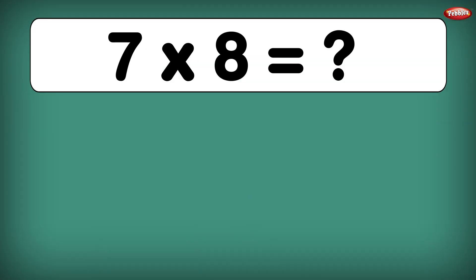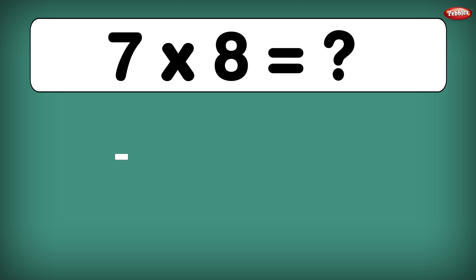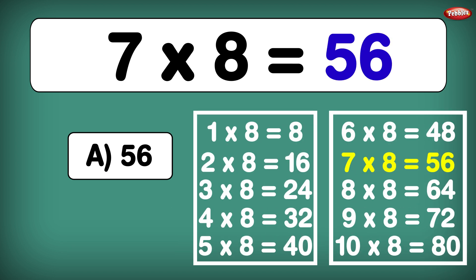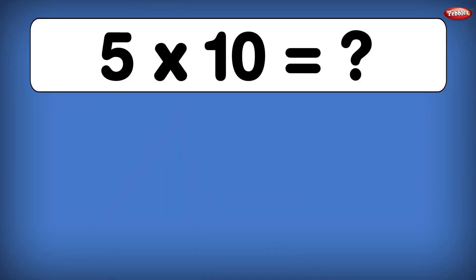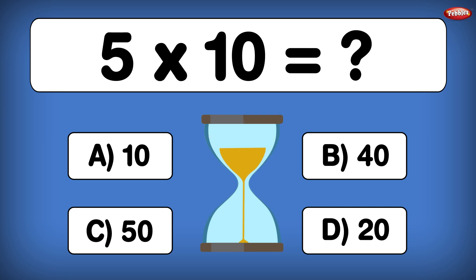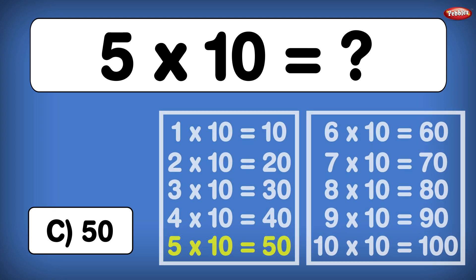7 times 8 is equal to... 7 times 8 is 56. 5 times 10 is equal to... 5 times 10 is 50.